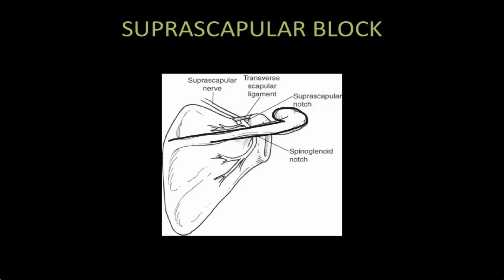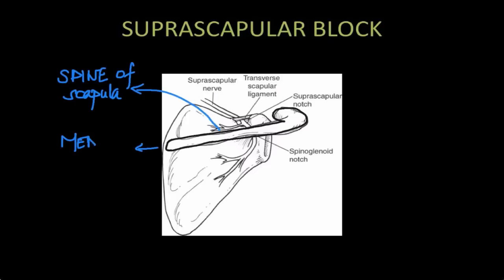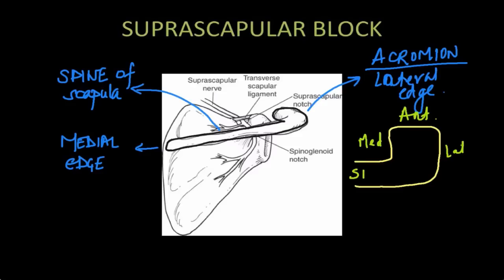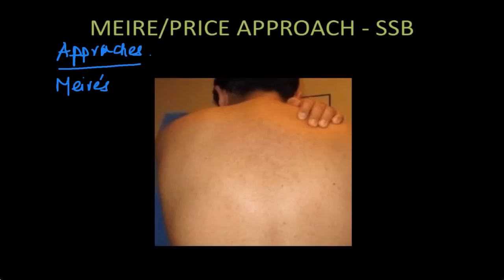In the scapula, the most important structure to palpate at the back is the spine of the scapula. It has got two edges: one is the medial edge that you can easily palpate, and the other is the lateral edge formed by the acromion process. The acromion itself is a flattened bone and it has three edges: one is the medial edge, the second is the anterior edge, and the third is the lateral edge, and posteriorly it continues with the spine of the scapula. The last thing you need to know is the inferior angle of the scapula.